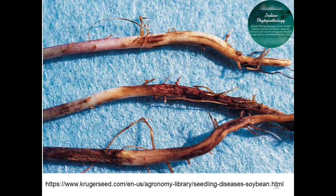In the root and lower stem decay phase, Phytophthora, Rhizoctonia, and sometimes Fusarium may be involved. The typical symptoms in this phase are brown to reddish-brown necrotic lesions on the stem and on rotted roots, which are the particular marks of identification for root and stem decay.